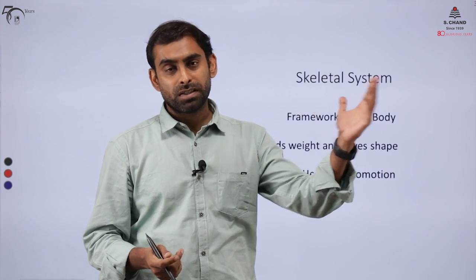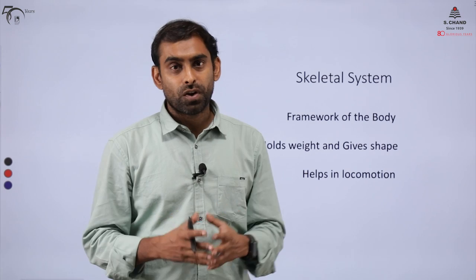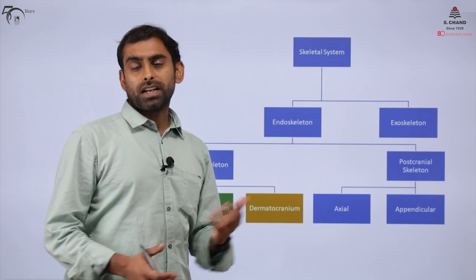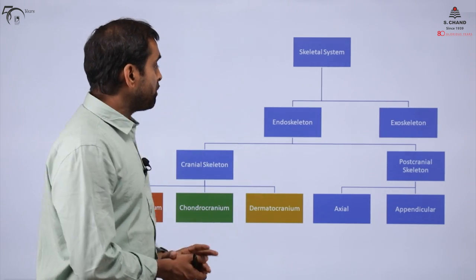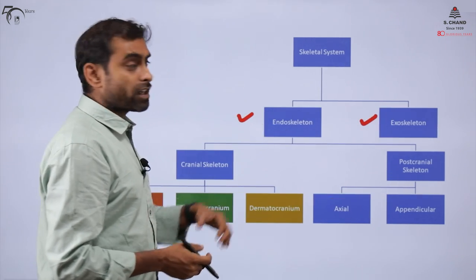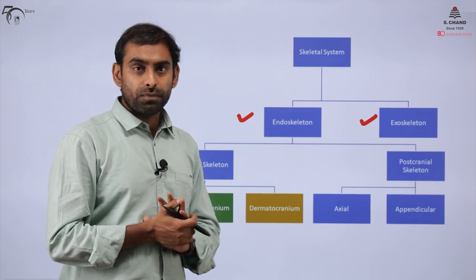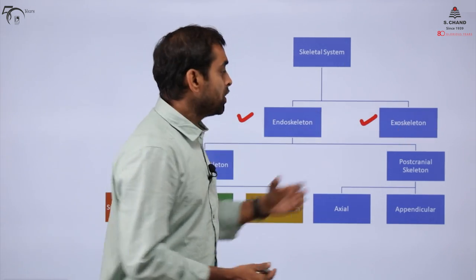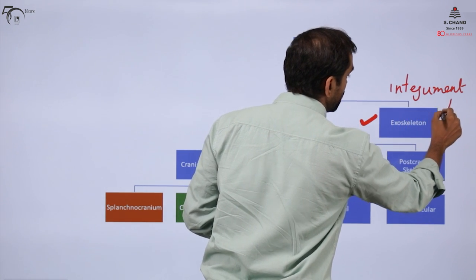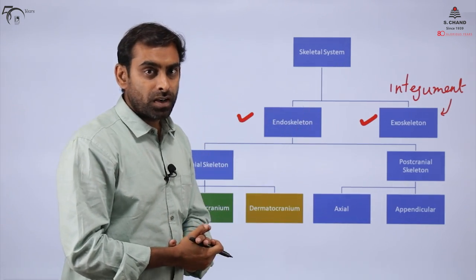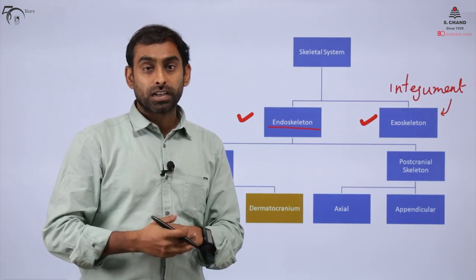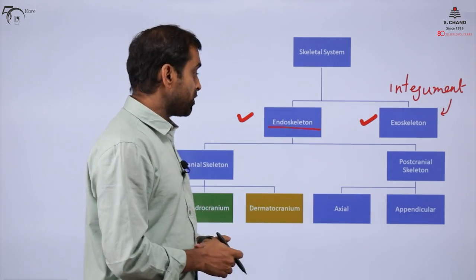Bones can survive in fossils for thousands of years. The entire skeletal system can be divided into two components: endoskeleton — the internal scaffolding of our body — and exoskeleton — the external one. The integumentary system we discussed earlier was also part of the skeletal system, but it was the exoskeleton. The endoskeleton provides a scaffold internally, on which muscles and other body parts are attached.